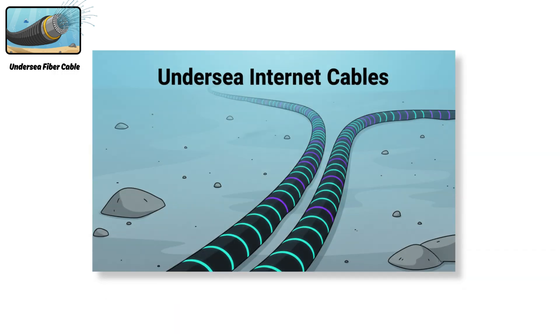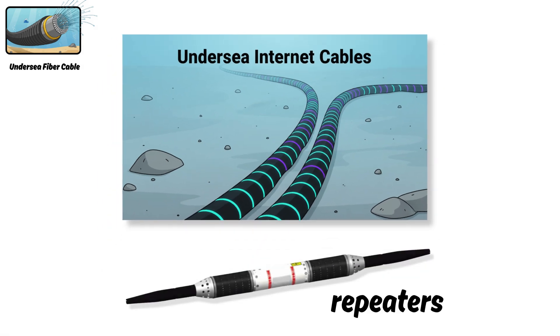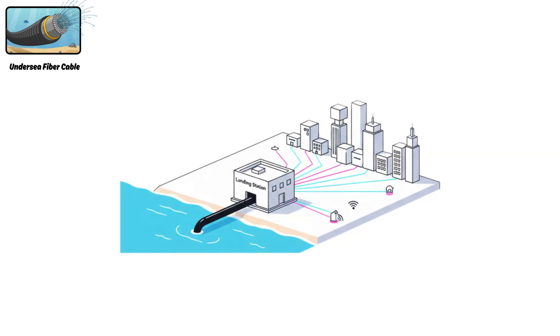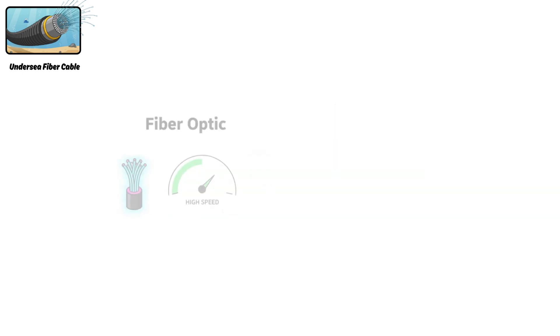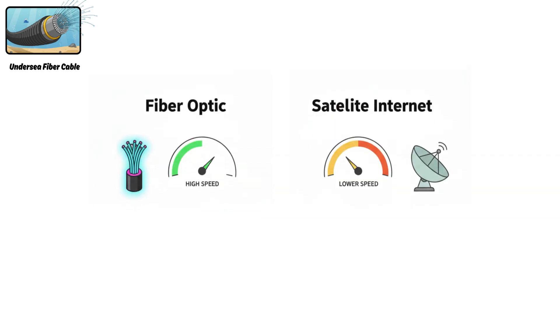Along the cable, there are special devices called repeaters, placed every few kilometers to keep the light signal strong. The cable ends at landing stations on land, which then connect to the normal internet we use every day. These cables are very important because they are faster and handle more data than satellites, which helps with things like video calls, online banking, cloud storage, and gaming.